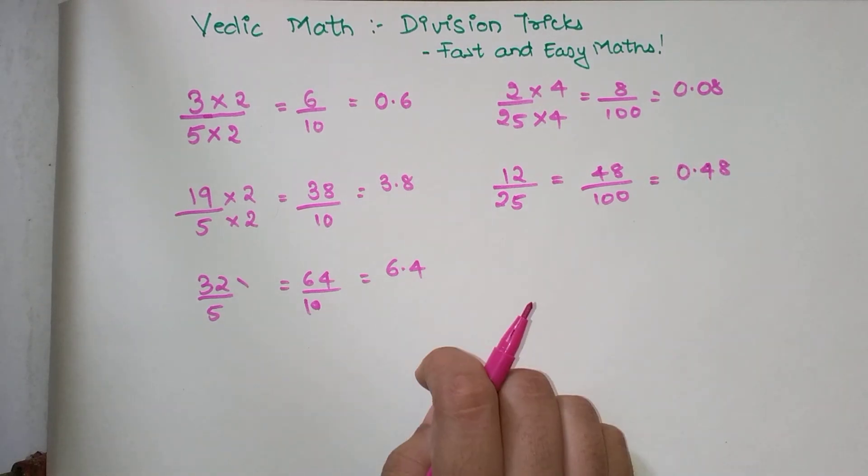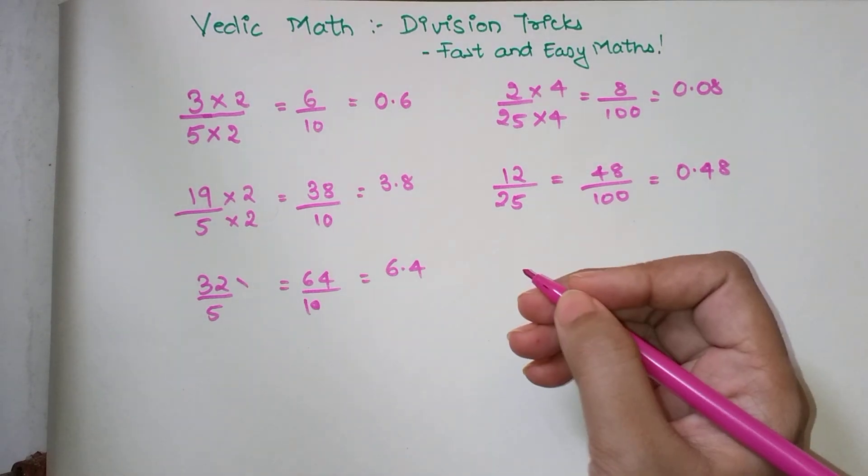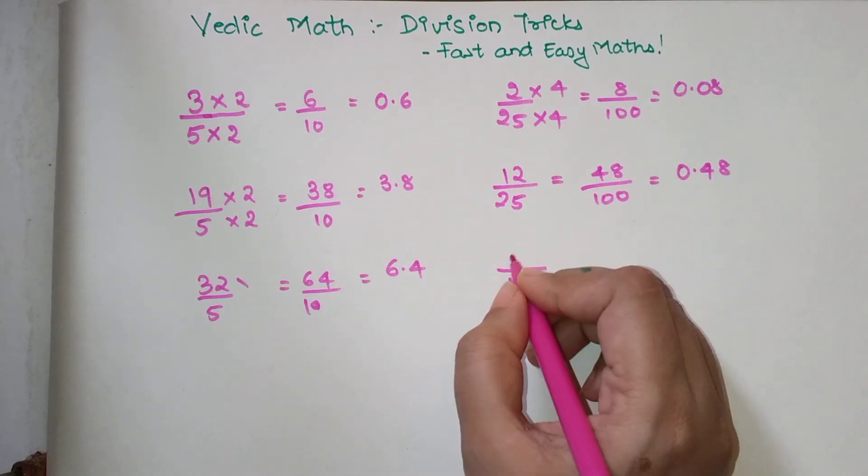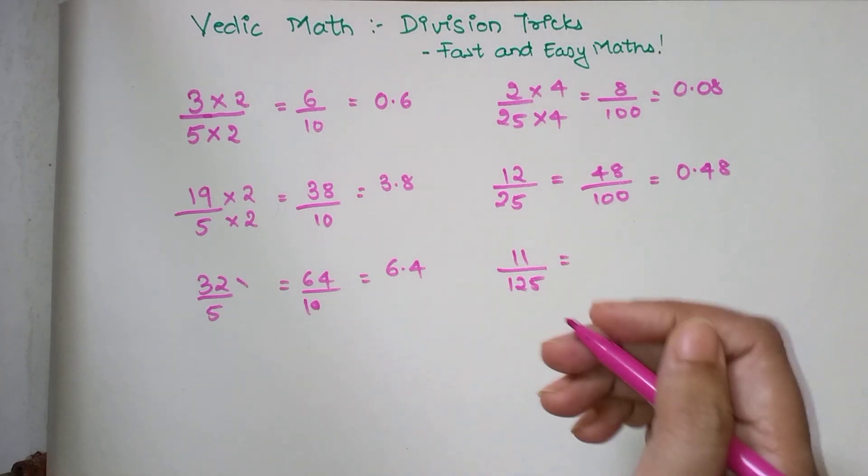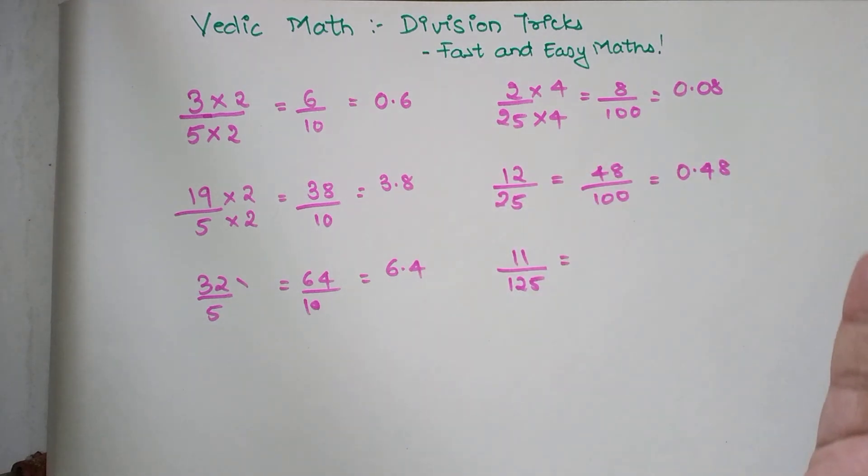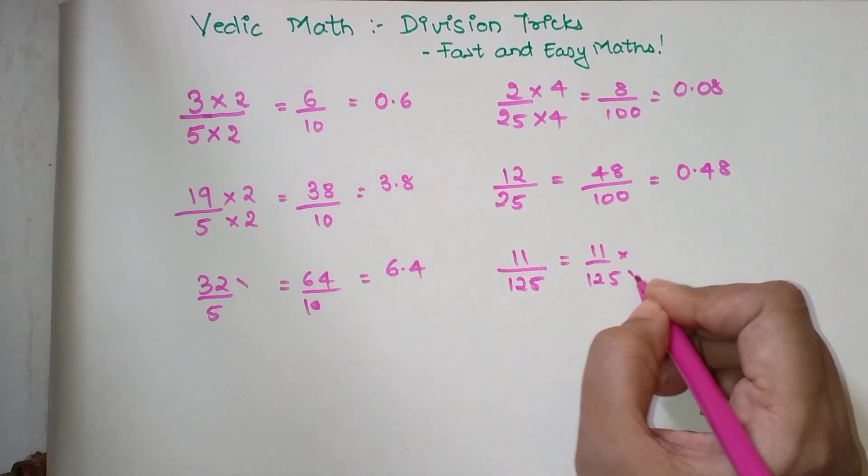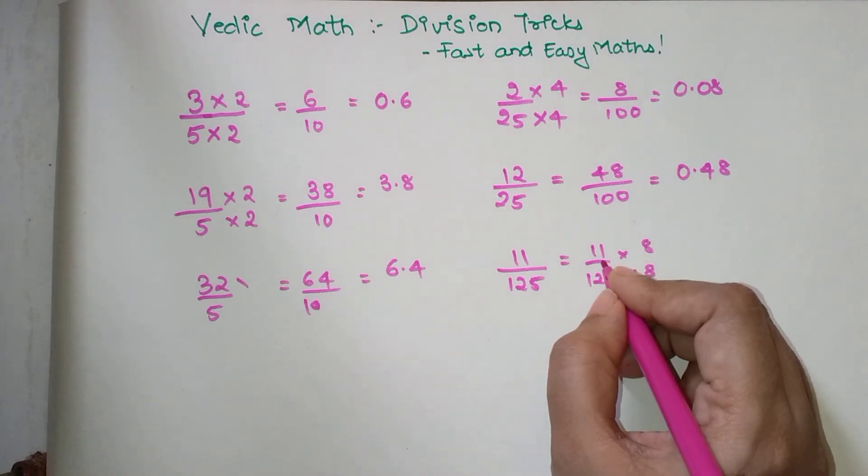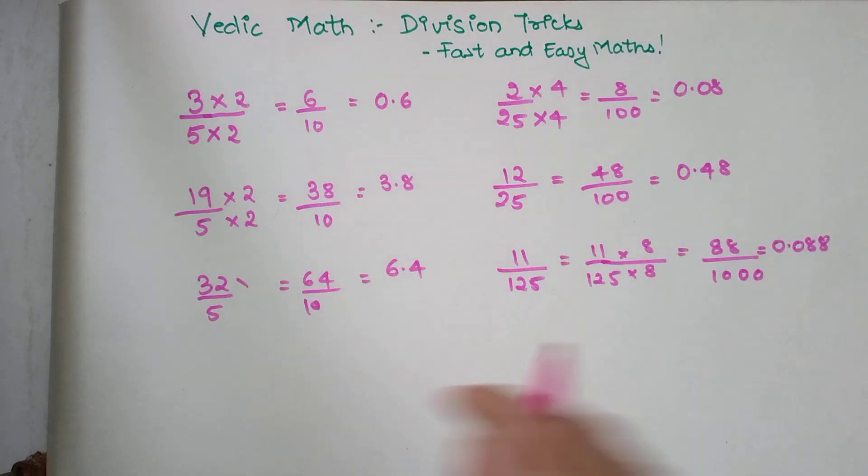Let's see what happens when the denominator is 125 and the numerator is 11. I want to convert this in terms of 1000, so I multiply the numerator and denominator by 8. When I do that, my denominator becomes 1000, so I get 88 upon 1000. My final answer is 0.088.